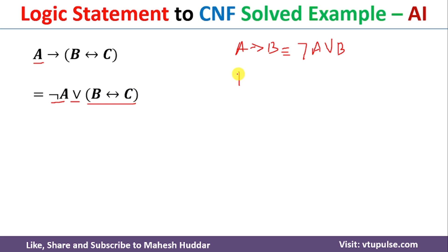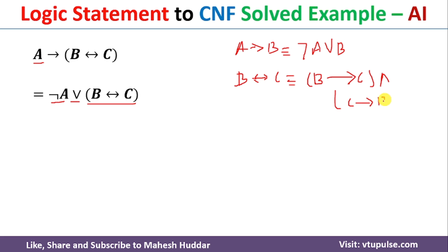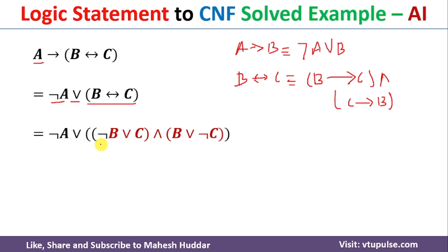We need to replace the biconditional. If we have B biconditional C, it is always equivalent to B implies C and C implies B — a conjunction of both implications. B implies C is negation of B disjunction C, and C implies B is negation of C disjunction B. So we get: negation of B disjunction C, conjunction negation of C disjunction B. Note that disjunction is commutative, so you can write it in any order.